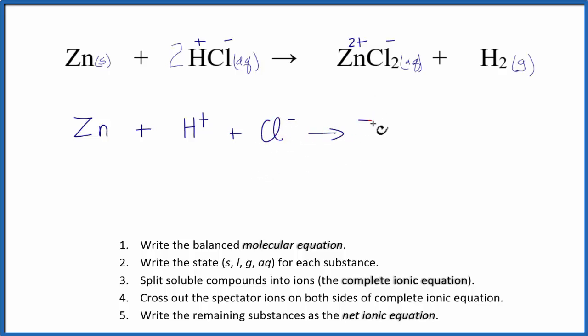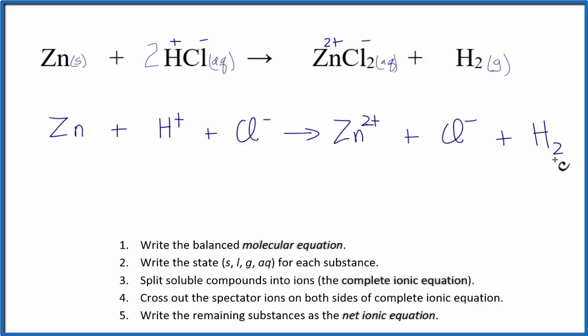And that will give us Zn2+, the zinc ion, plus Cl minus, plus that H2 that we had before.